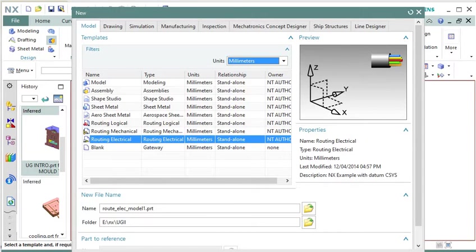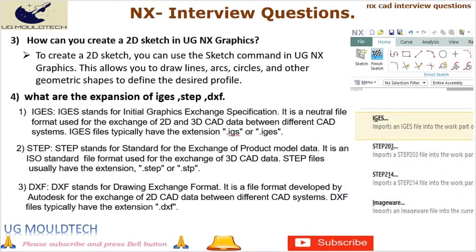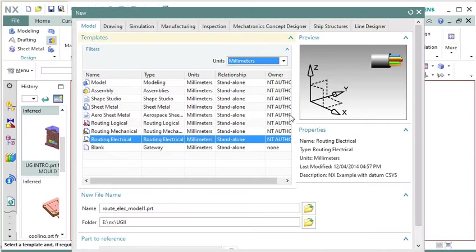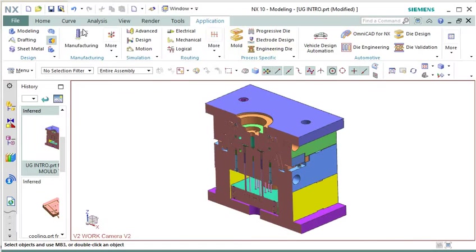Question 3: How can you create a 2D sketch in UGNX Graphics? To create a 2D sketch, you can use the sketch command in UGNX Graphics. This allows you to draw lines, arcs, circles, and other geometric shapes to define the desired profile.